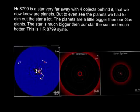HR 8799 is a star very far away with four objects. Now that we know that there are four objects, originally it was only believed that there were three. But now we have found more evidence that there are four.